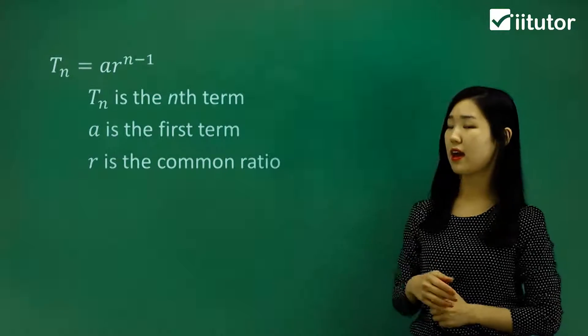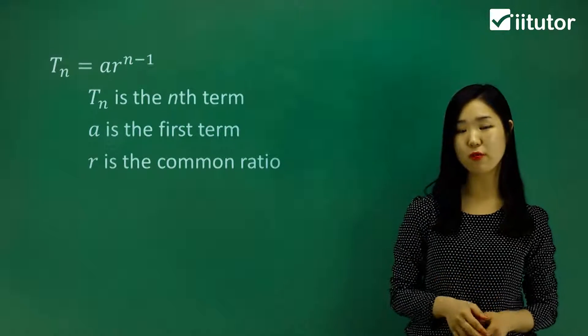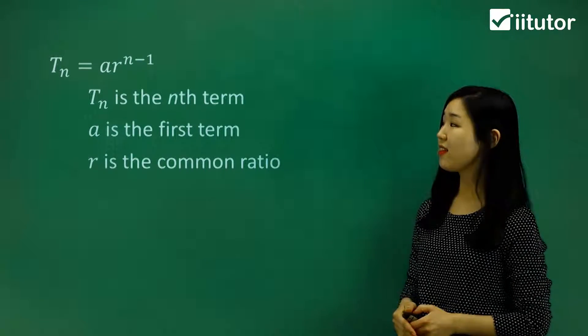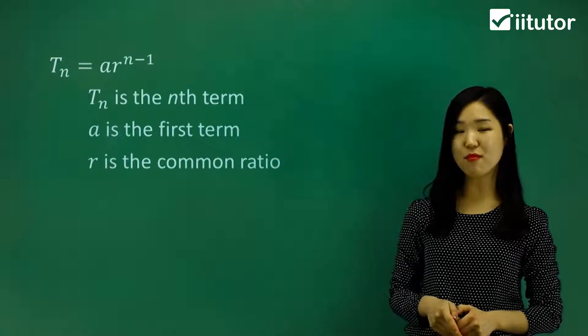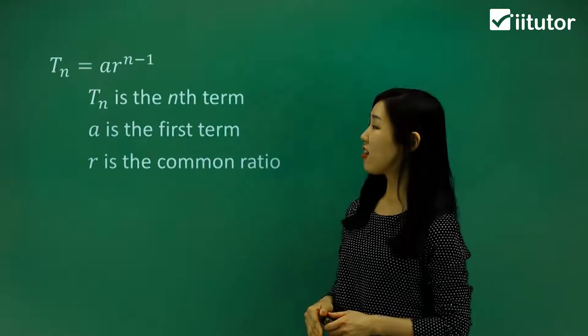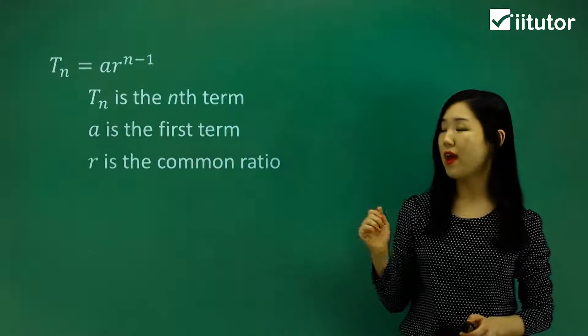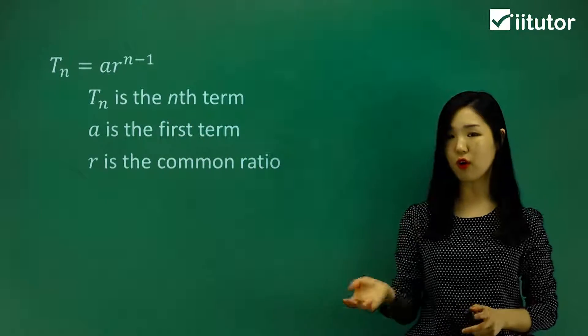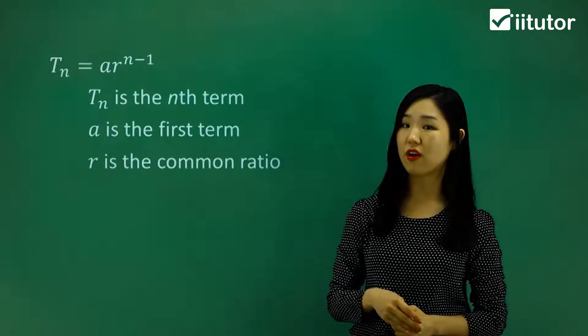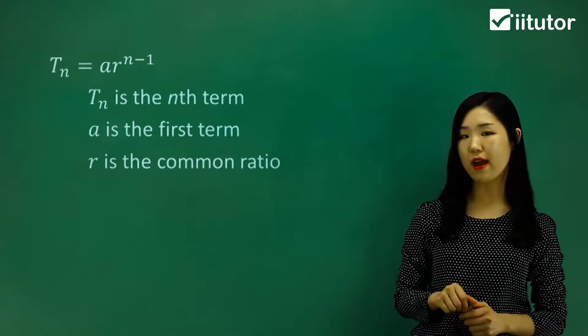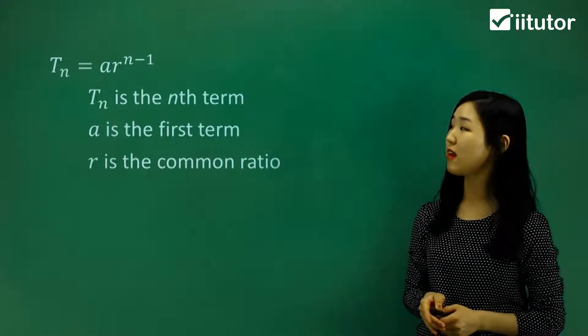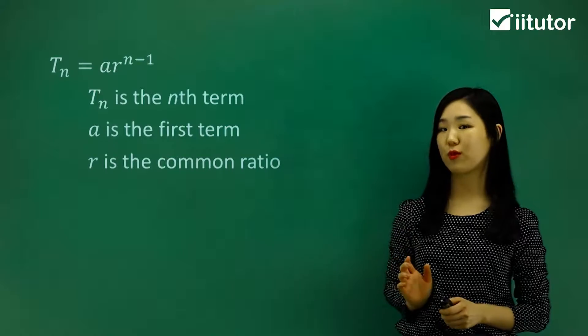Now I've got the geometric Tn formula here, the term formula for geometric series and sequences. You can see here, Tn is ar^(n-1), so R has a power of n minus 1. You should know that Tn is the nth term, a is our first term of that sequence, and R is the common ratio. Just keep those in mind, make sure you know which pronumeral stands for what, and we'll try and use this term formula to do some questions.